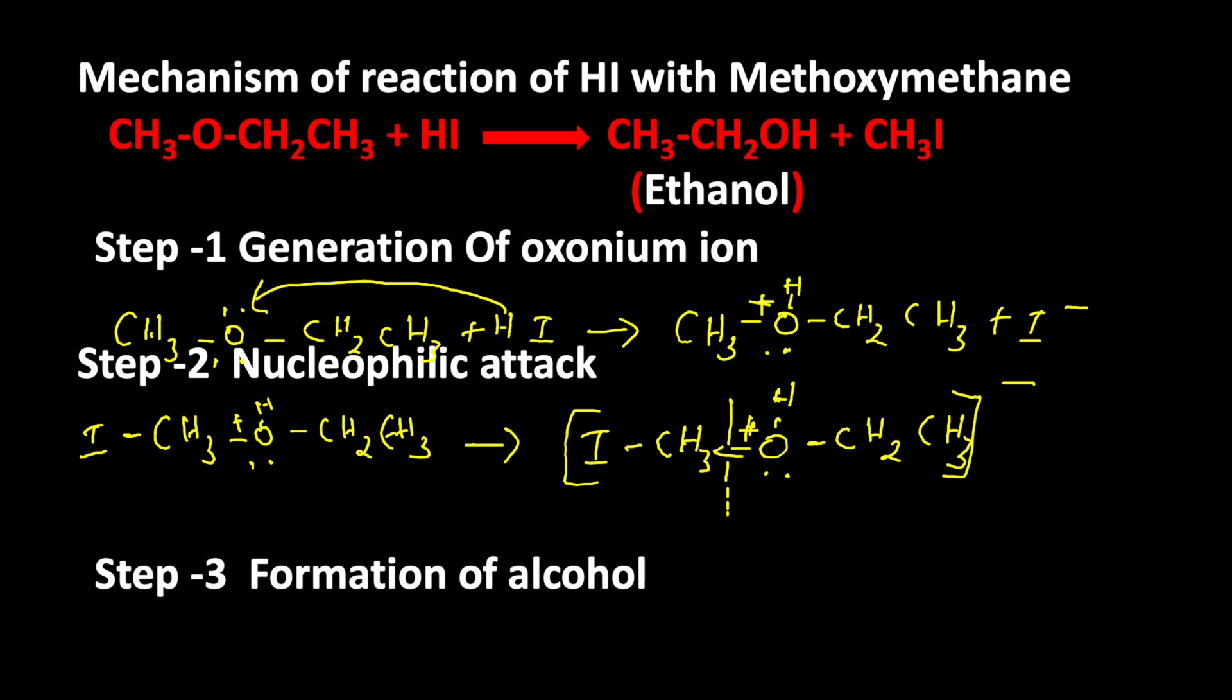Let us come to step three: formation of alcohol. The transition state molecule breaks. So the bond breaks here and results in the formation of CH3I methyl iodide and then ethanol CH3CH2OH.